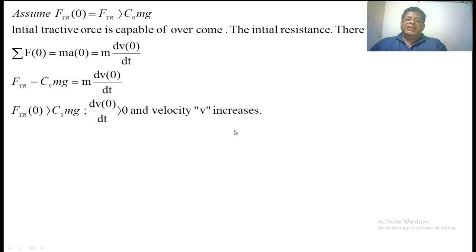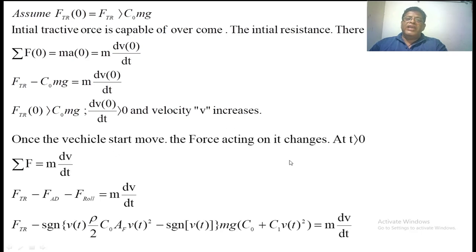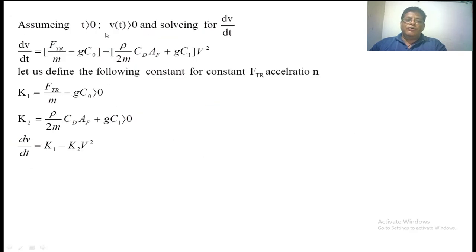Once the vehicle starts moving, the forces acting on it change for t greater than 0. So sigma F = M·(dV/dt). The net force acting on the vehicle is F_tr minus the air drag force minus the rolling friction force, which equals M·(dV/dt). Using the known expressions for air drag force and rolling friction, we substitute all these values and finally arrive at the expression: dV/dt = F_tr/M − g·C0 − (ρ/(2M))·Cd·Af·V² + g·C1·V².